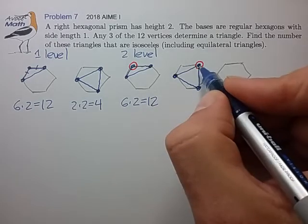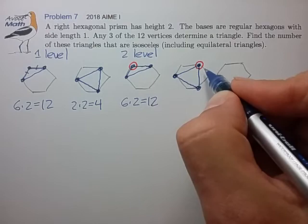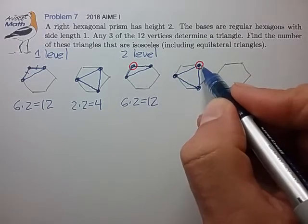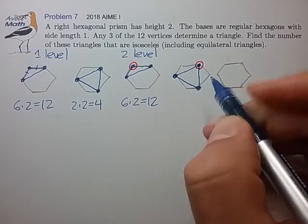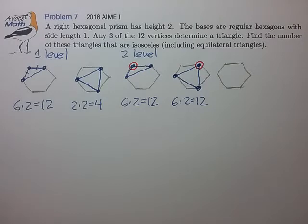So now we can actually generate six equivalent patterns by rotating this pattern. And we have two configurations, two blue on the bottom, red on the top, or two blue on the top, red on the bottom. Six times two, twelve of these types of triangles.